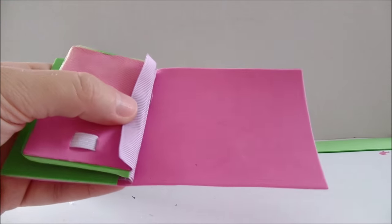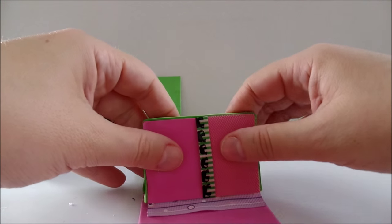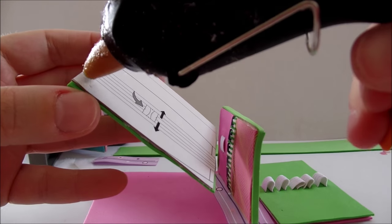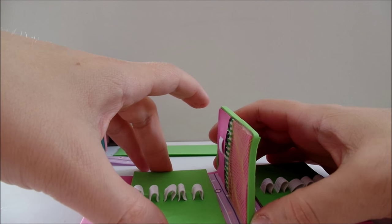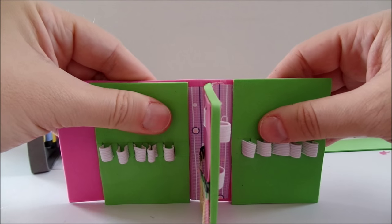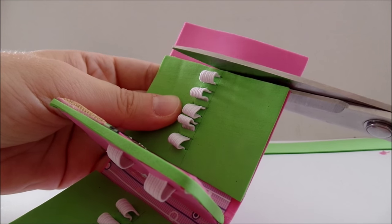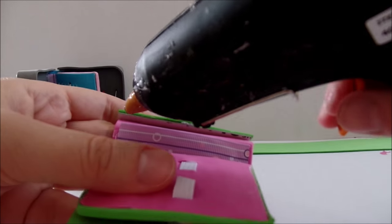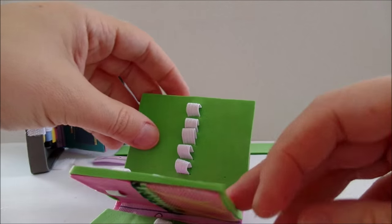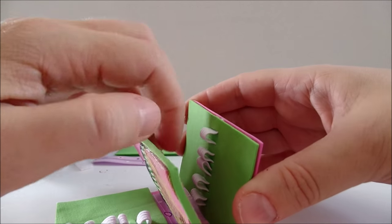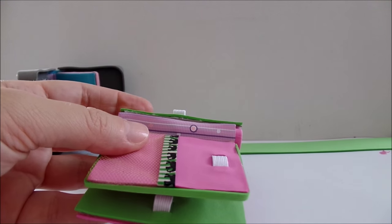I will now glue the second ribbon. Glue the second piece of cardboard. Trim off the excess. Let us add glue here and glue it vertically. Same on the other side.